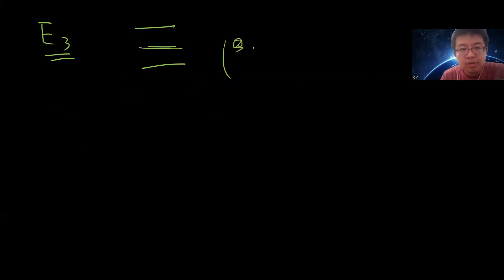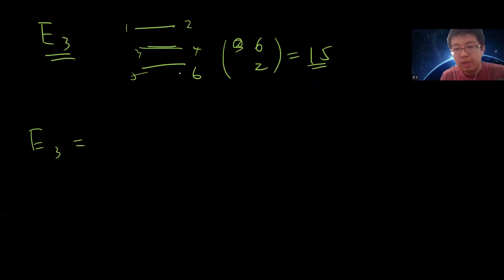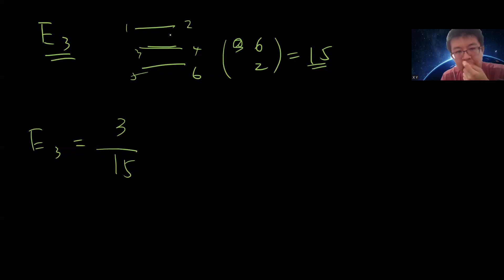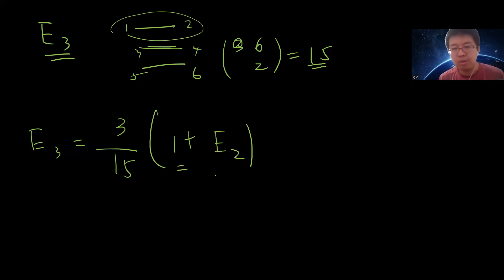Let's go to E_3. I think once we solve E_3 we'll see the pattern. With three noodles we have 6 ends, so we choose 2 from 6, giving C(6,2) = 15 starting choices. If I choose ends one-two, three-four, or five-six — that's 3 out of 15 choices — I immediately form a circle, and the rest becomes E_2.